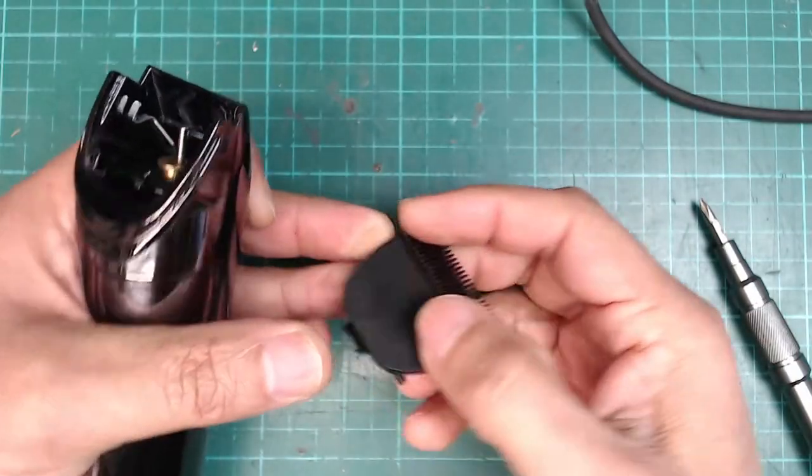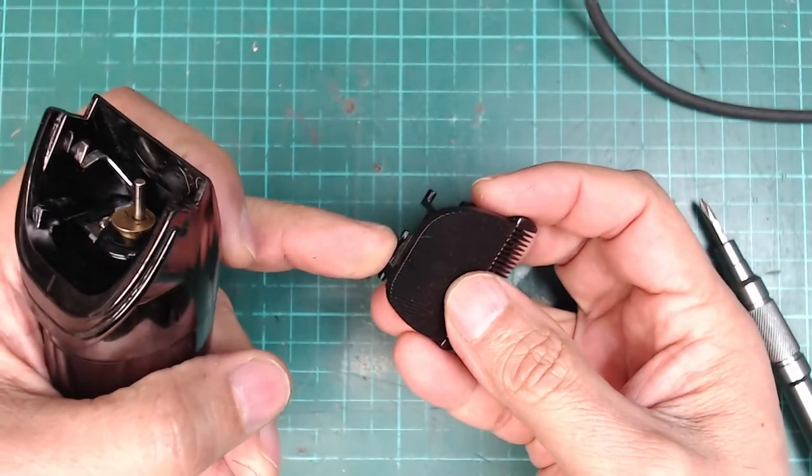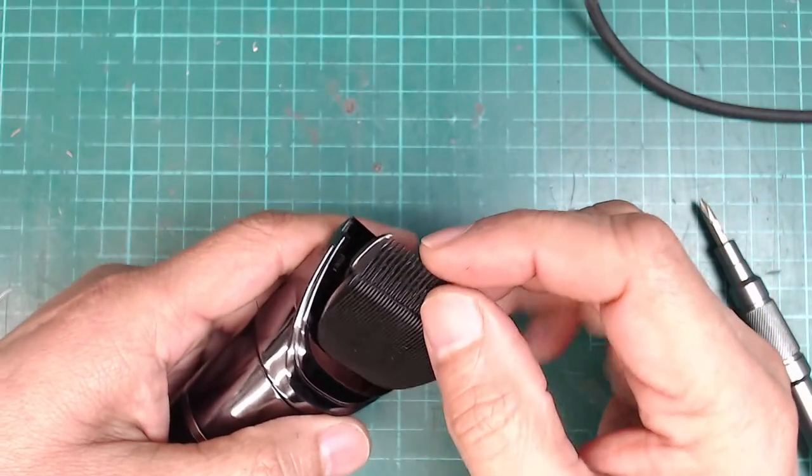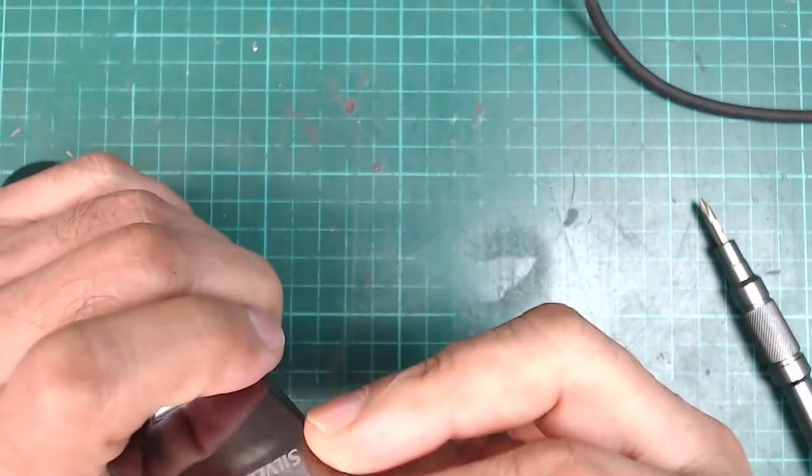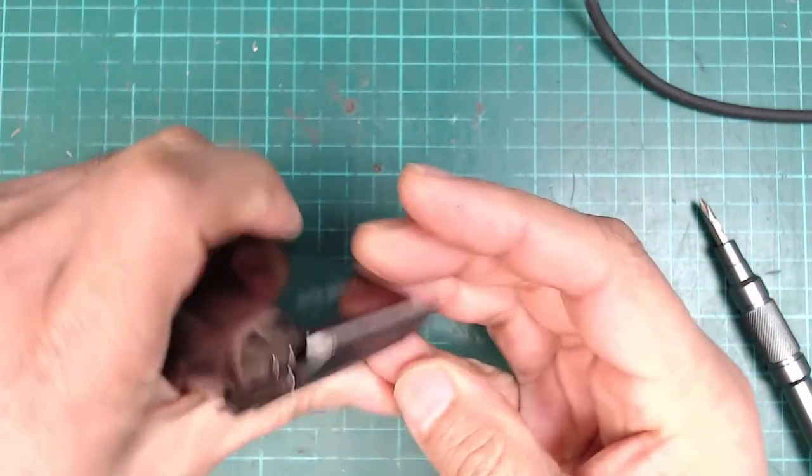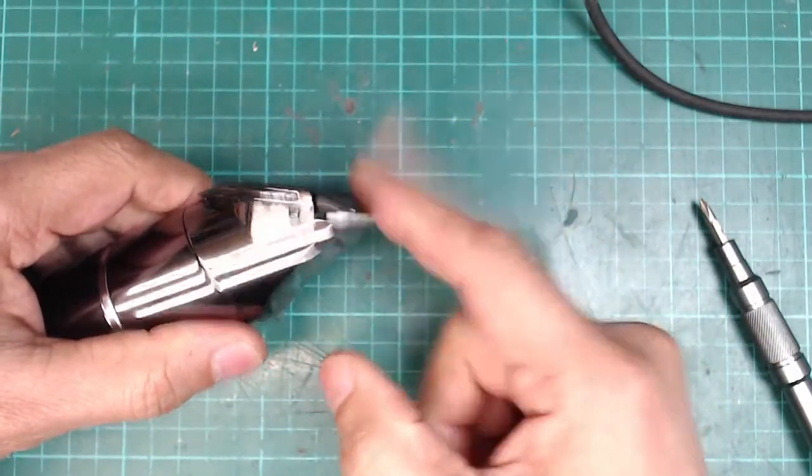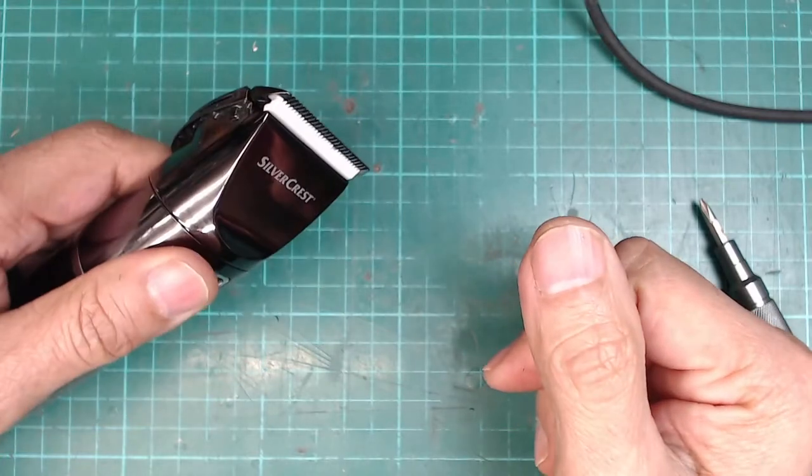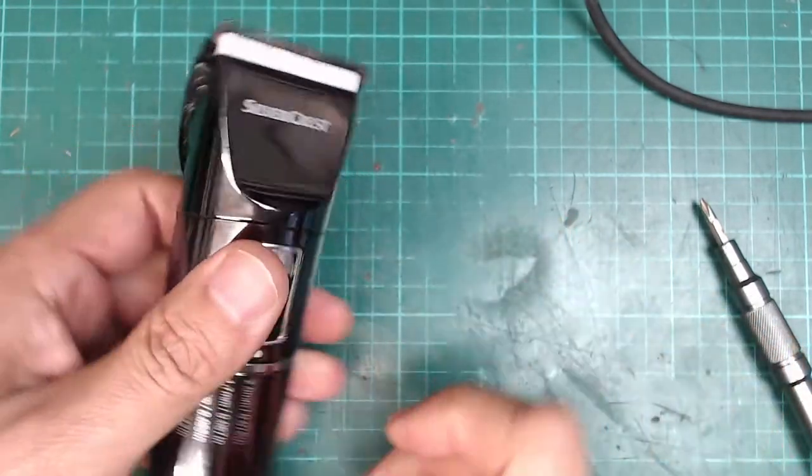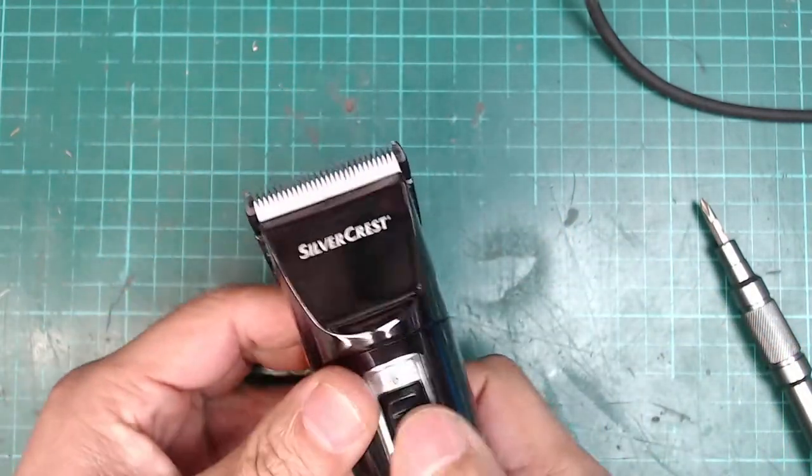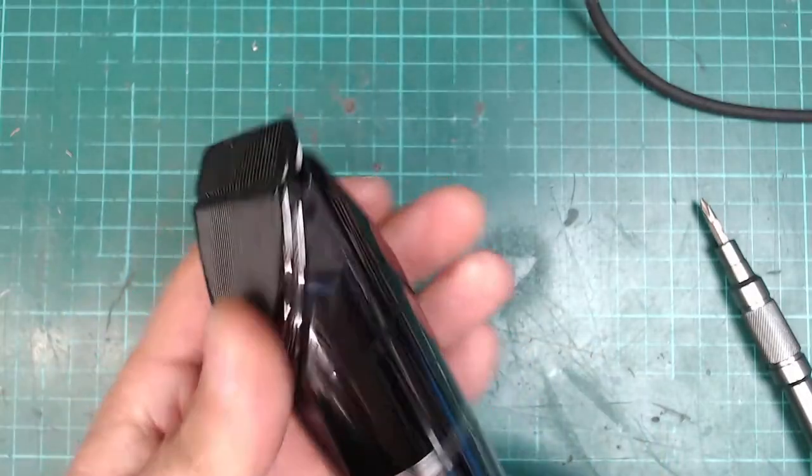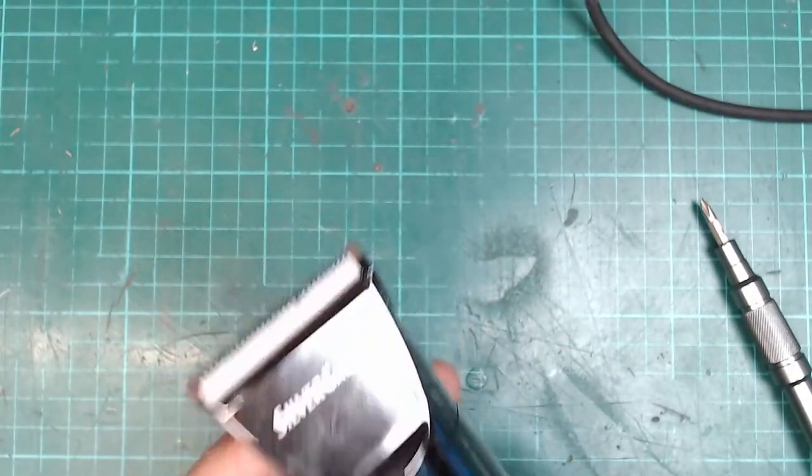The bottom piece needs to go in first, and then you just push it down and it clicks in. That shouldn't be coming off by itself, so you should be okay with that. That's what you need to do.